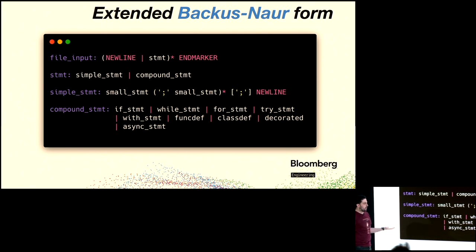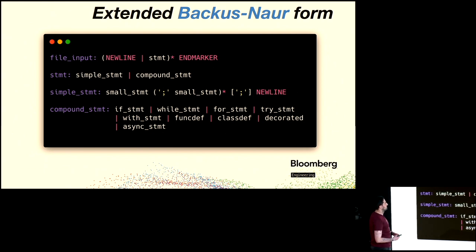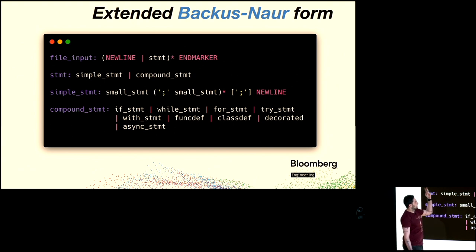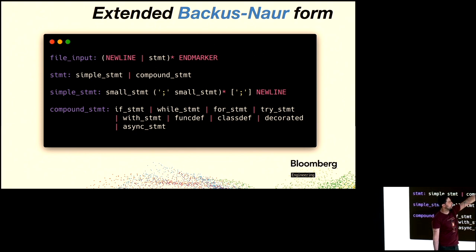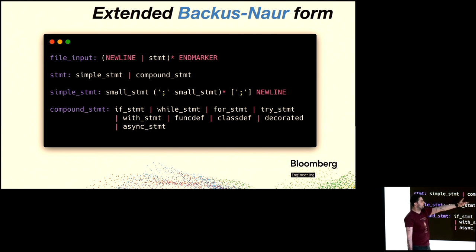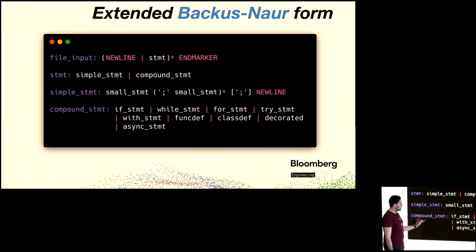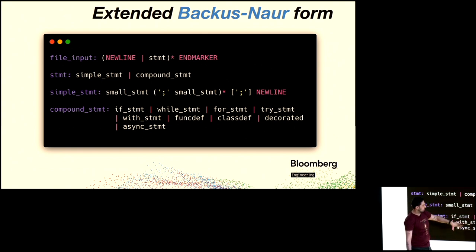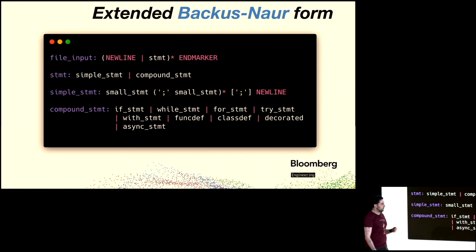Here's a chunk of the actual Python grammar. Starting with the first rule, 'file_input', a file can start with a newline, then zero or more statements, then end of file. A statement is a simple statement or a compound statement. A simple statement is a small statement, et cetera. In the compound statement we see things we recognize, like if statement and while statement. The whole document — this is only a subset — describes what is possible in the grammar.